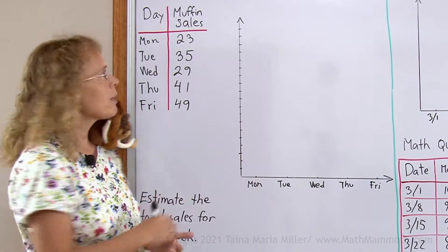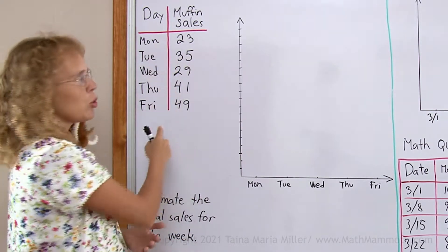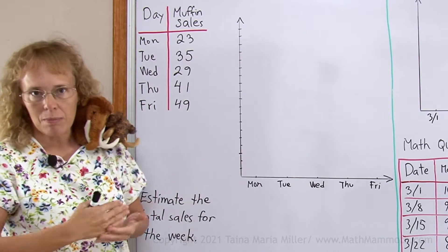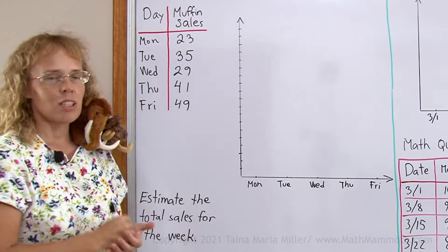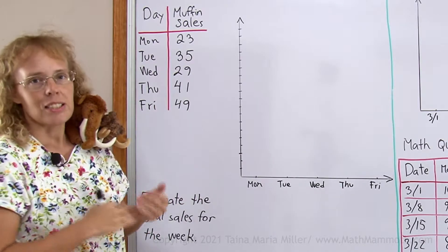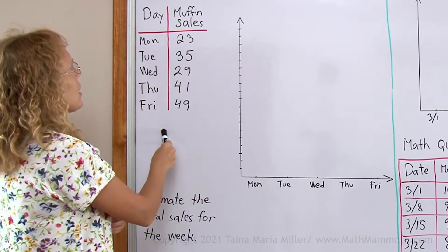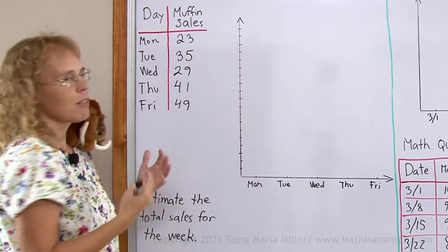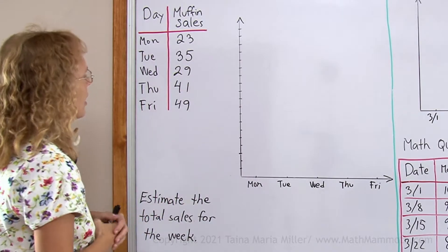In a line graph, you always have some kind of a time unit here. It could be weekdays, it could be months, it could be hours, anything, as long as it is time. That's usually the case, and then muffin sales is whatever we are graphing.